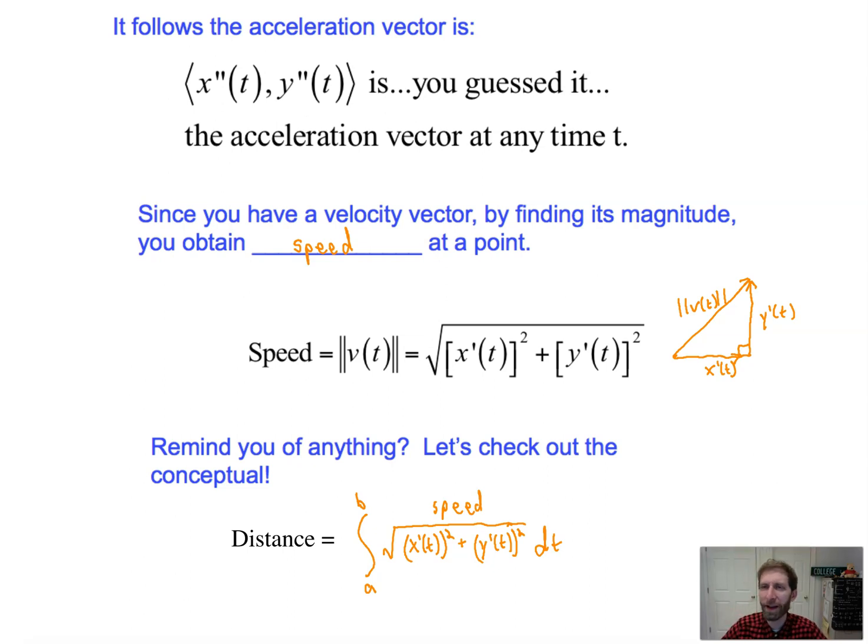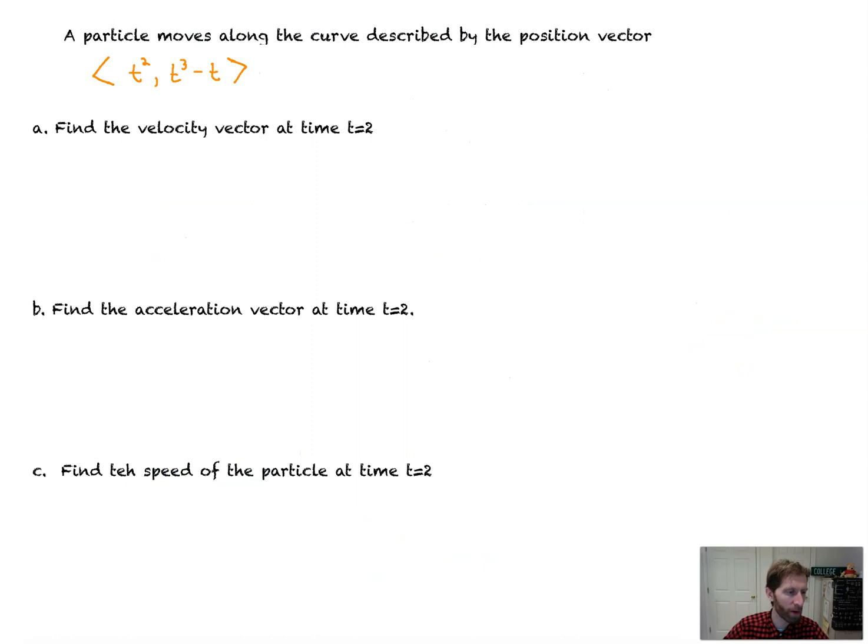Let's keep going. So let's do a problem with this stuff. We'll put all this together, and we'll be in good shape. Actually, we'll do a bunch of problems here. So a particle moves along the curve described by the position vector. Think of this as like you have, if you must rewrite it, x of t equals t squared, and y of t equals t cubed minus t. Wait until you see how quick these problems are. It's like parametrics.